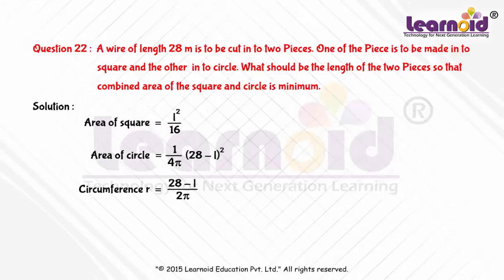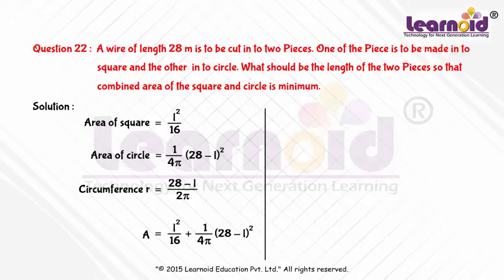The total area of the square and the circle is given by A equals L² by 16 plus (28 minus L)² by 4π. In the given problem, we need to minimize A.